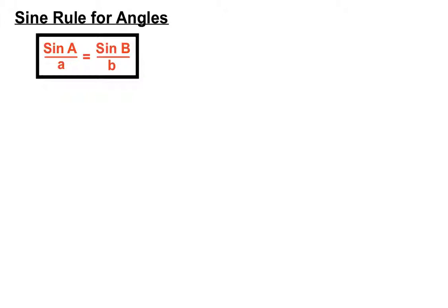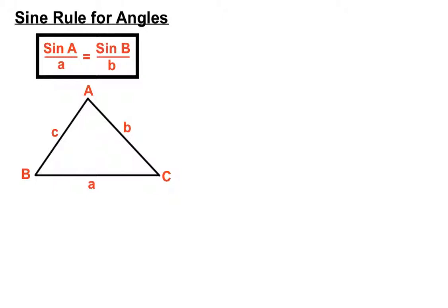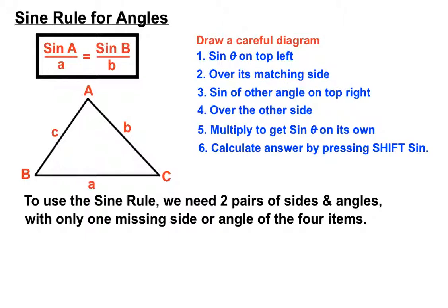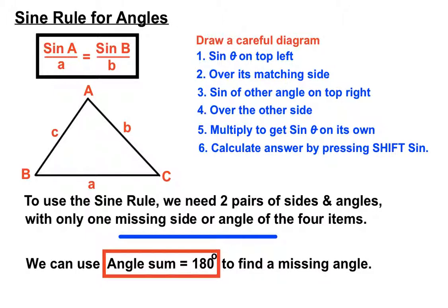Let's sum up the sine rule for angles. Sine A over a equals sine B over b, because the angles in a triangle are closely related to the length of their opposite sides. To use the sine rule, we need two pairs of sides and angles with only one missing item. Draw a careful diagram if needed, then follow the steps shown in our three examples. We can also combine the sine rule with the angle sum of a triangle equals 180 degrees to find missing angles.